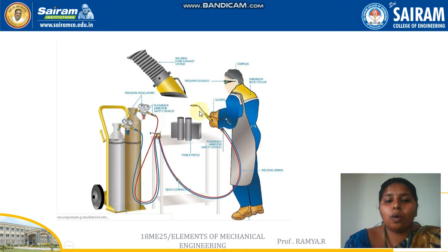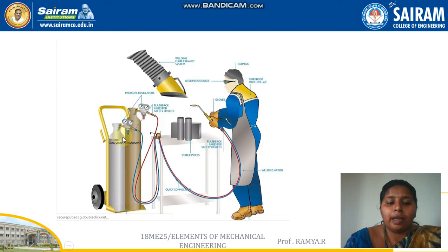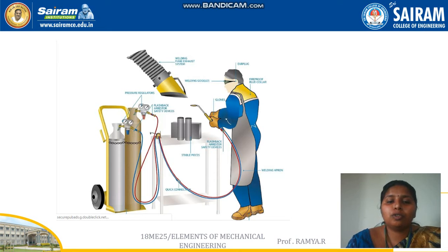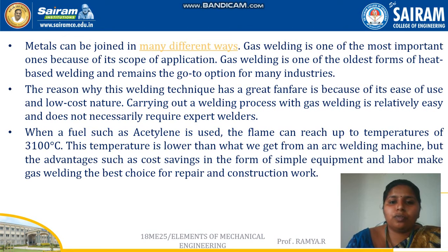This covers the working of tungsten inert gas and metal inert gas welding. The next topic is gas welding. The equipment used for gas welding includes a gas cylinder — one contains oxygen and the other contains acetylene or hydrogen. Two types of gas welding are done: oxy-acetylene gas welding and oxy-hydrogen gas welding.